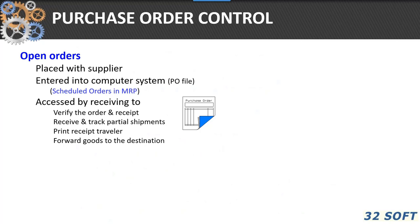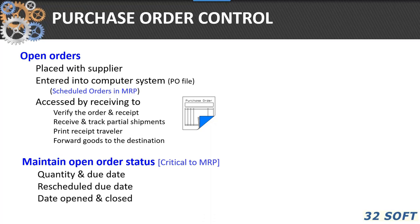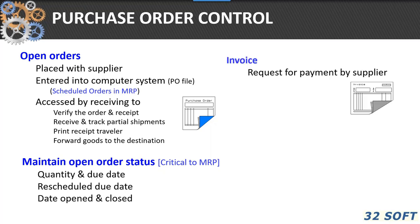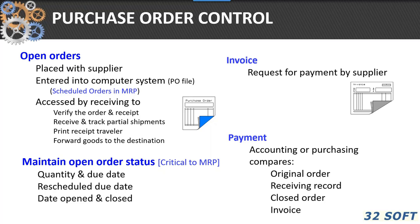The control of purchase orders has to do with open orders and maintaining open order status. We use these tools in QAD to allow us to place purchase orders and maintain accurate status. Once we have processed the PO and receipt, the supplier will send an invoice, and it's purchasing's responsibility to interact with accounts payable to make sure that the original invoice, the original purchase order, and receiving records are all coordinated so that the supplier can be paid in a timely manner.